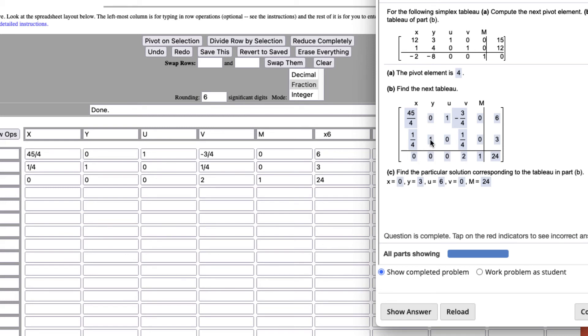So y has a 1, u has a 1, m has a 1. y is equal to 3, u is equal to 6, and m is equal to 24.